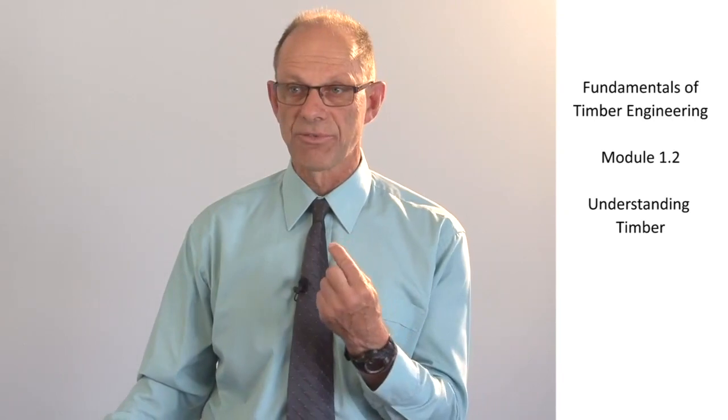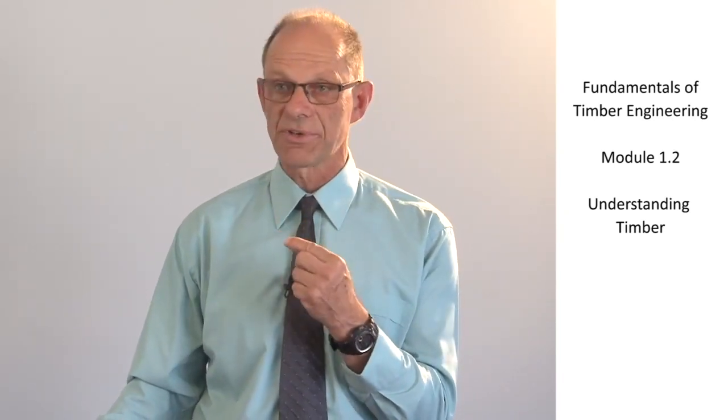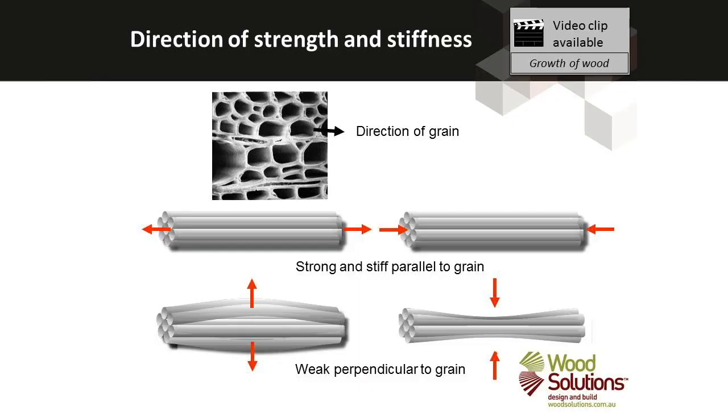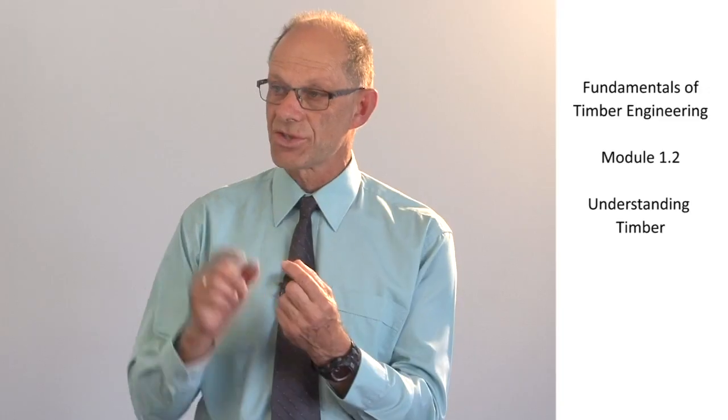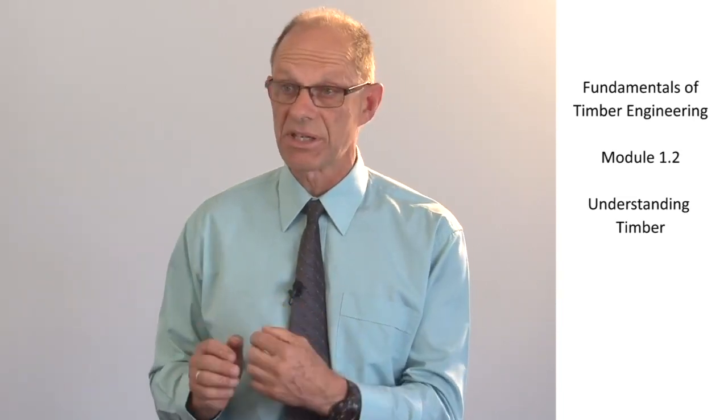In terms of structural performance the cells function differently in different directions. If we load the cells parallel to the direction of the cells we find that they have very large stiffness and high strength as well. On the other hand if we load the cells perpendicular to their axis we find that they have low strength and low stiffness in both tension and compression. So they squish up easier in compression and they can actually lead to splitting if we load it across the grain in tension.